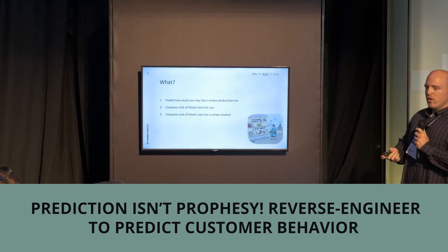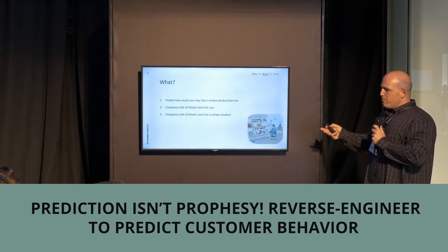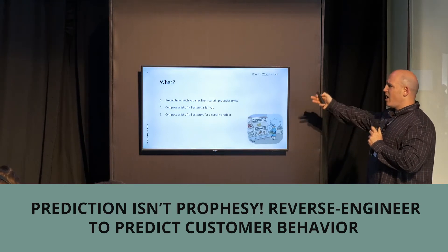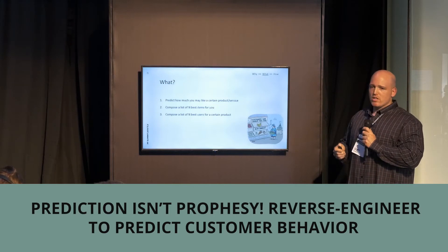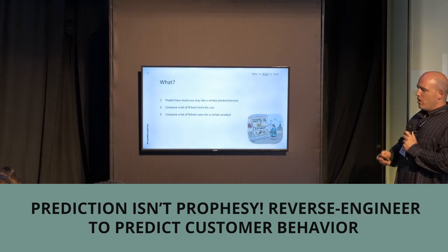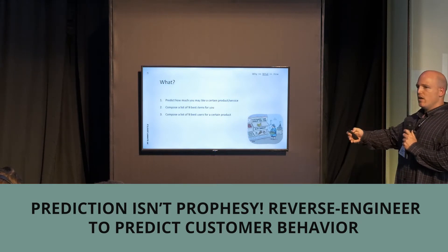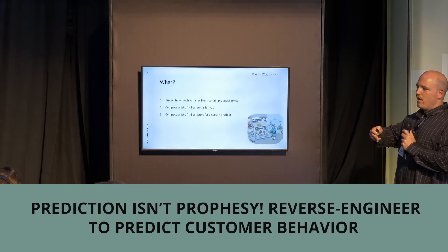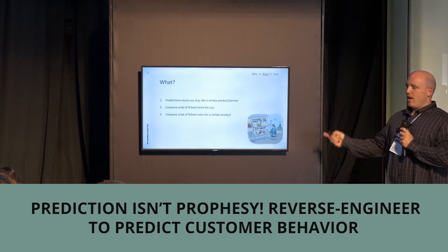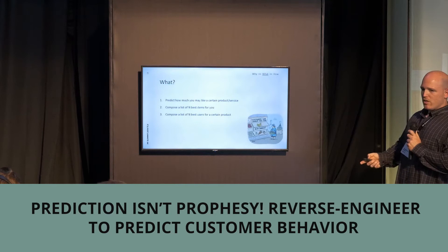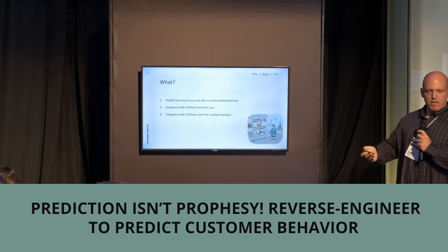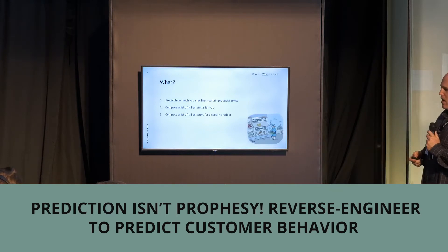What are we trying to achieve with the recommendation model? There are three main things: first, to predict how much a customer may like a certain product or service; second, to compose a list of the N-best items for a specific customer, which can be surfaced via email, website, or other channels; and third, to compose a list of the N-best users for a specific product — useful when you want to promote a specific item or run a sale.